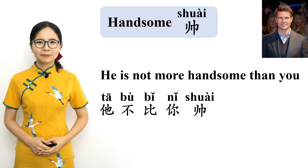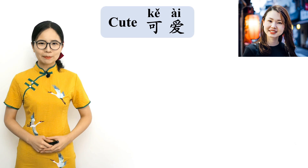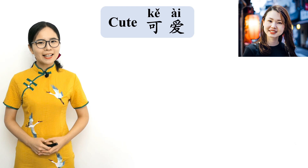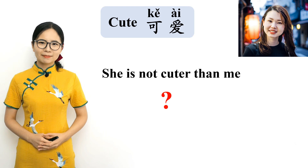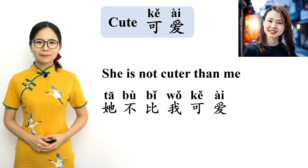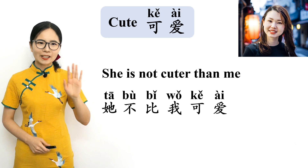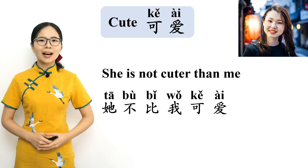Cute in Chinese is 可爱. Please repeat after me. 可爱 — cute. How do you say 'she is not cuter than me'? That's right. 她不比我可爱. Please repeat after me. 她不比我可爱. She is not cuter than me.